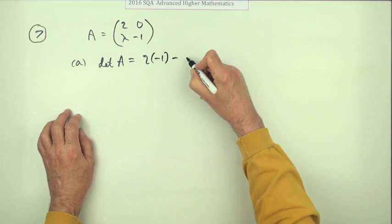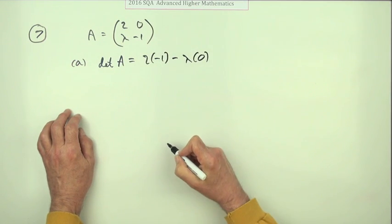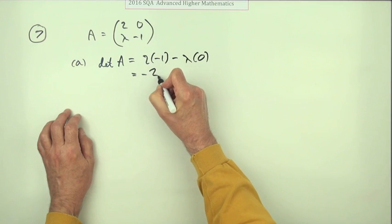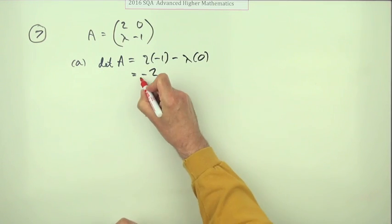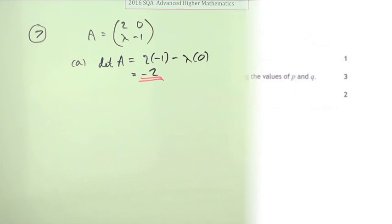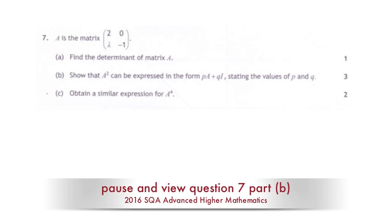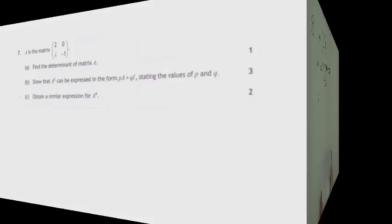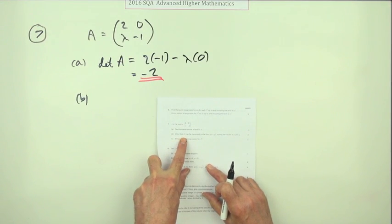Well, the determinant of a two by two matrix is given by the product of the main diagonal minus the product of the other diagonal, so that'll just be negative two.